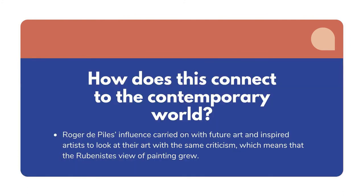The question of how this connects to the contemporary world can be summed up by the influence carried on through his popular grading scale — it inspired future artists to critique their art in that form. It also means that Rubens' view of the flowy, more colorful art would continue because it proved higher on the scale of grading.